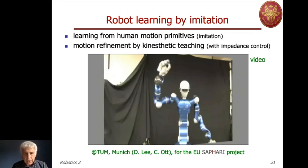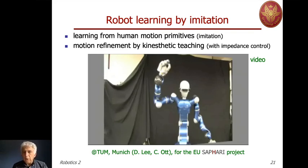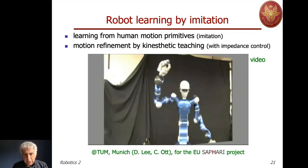However, the result was not what was expected. So there is a second phase in which the motion is refined by so-called kinesthetic teaching. A person — Dr. Don Hui Li — will touch the robot and accommodate the arm while in motion under impedance control, a particular controller that handles motion and exchanges of forces at the same time, in order to obtain a smoother, more human-like behavior.